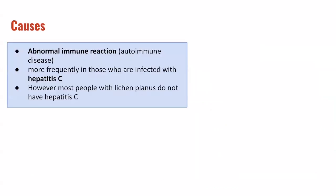In terms of the causes of lichen planus, it's thought to be due to an abnormal immune reaction, considered an autoimmune disease. It is associated with hepatitis C; however, most people with lichen planus do not have hepatitis C.